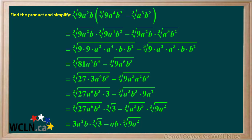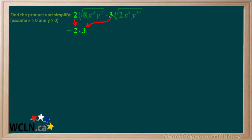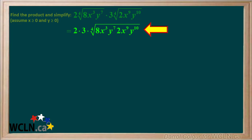This process also works for higher roots. This problem involves fourth roots. We're asked to find this product. Because a fourth root is an even index, we must assume that the variables x and y must be non-negative values. We'll start by multiplying the numbers 2 times 3, then multiply the radicands in each radical and combine them under a single radical sign.